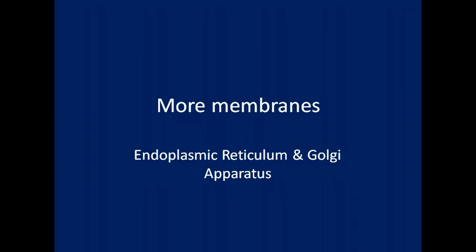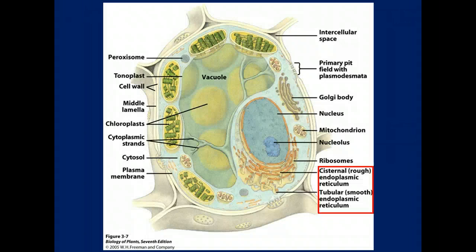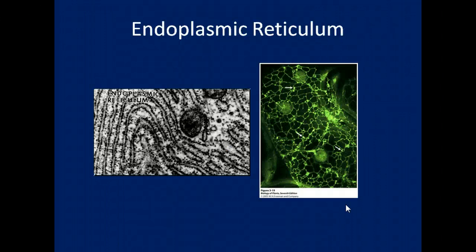They move things around on the inside of the cell. There are two types of endoplasmic reticulum: rough endoplasmic reticulum and smooth endoplasmic reticulum. The rough endoplasmic reticulum is coated in little black dots called ribosomes, and these ribosomes are really important for protein synthesis — this is where all of those important proteins are actually synthesized to begin with.